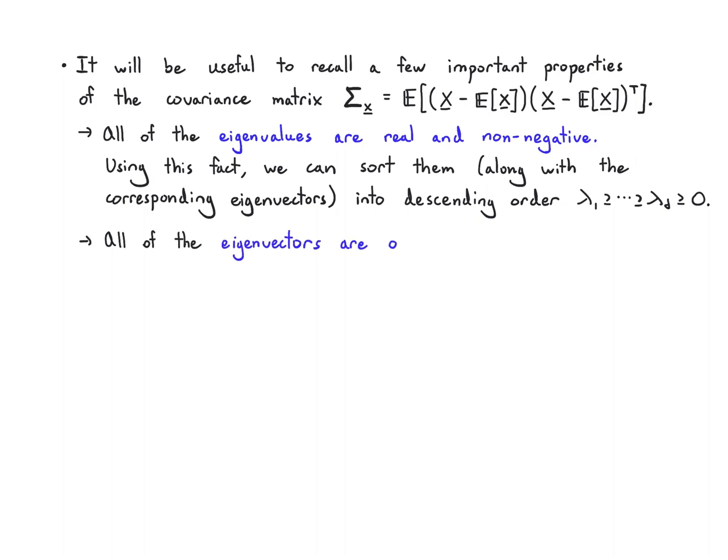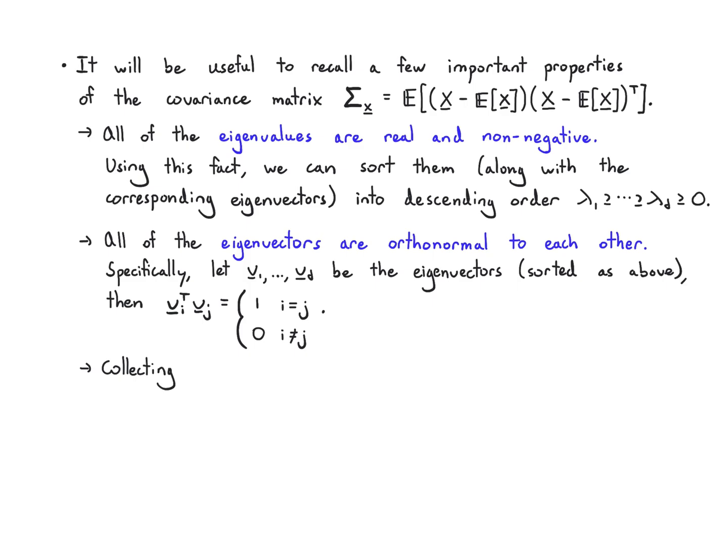All of the eigenvectors are orthonormal to each other. Specifically, if I let v₁ through vd be the eigenvectors sorted in the same order as the eigenvalues, then vᵢᵀvⱼ is either 1 or 0. It's 1 when they're the same eigenvector, 0 otherwise.